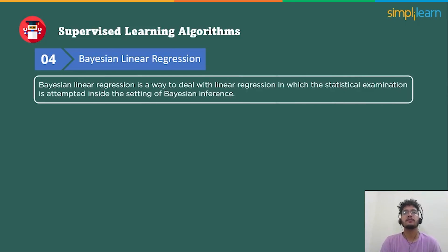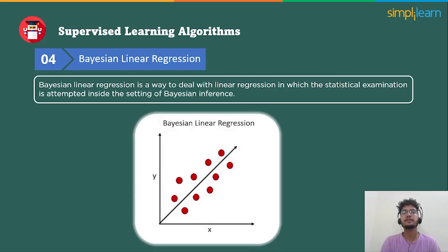Bayesian linear regression is a way to deal with linear regression in which statistical analysis is undertaken in the settings of Bayesian inference. Linear regression and Bayesian regression can generate the same predictions, and with the help of Bayesian processing, we can retrieve the complete variety of inferential solutions instead of a point estimate.